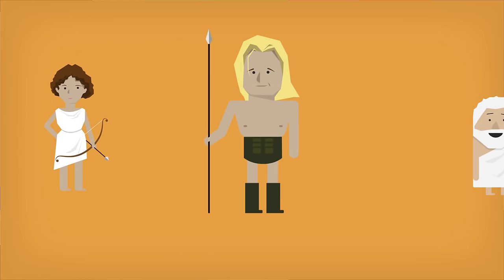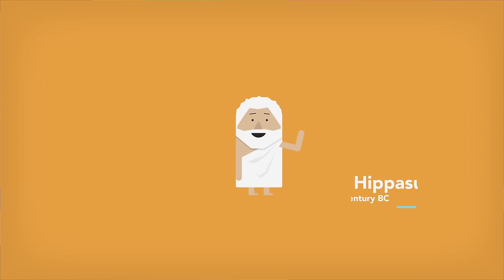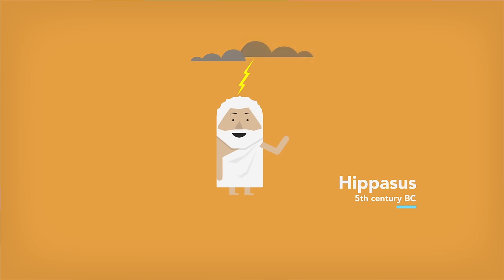Like many heroes of Greek myths, the philosopher Hippasus was rumored to have been mortally punished by the gods. But what was his crime?